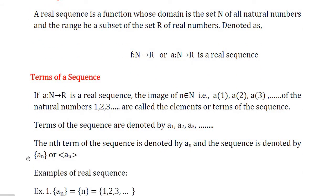The nth term of the sequence is denoted by aₙ. The sequence is denoted by {aₙ} within flower brackets, or aₙ between less-than and greater-than symbols. Sometimes the sequence can also be denoted as {xₙ} within flower brackets. The terms of the sequence xₙ are denoted by x₁, x₂, x₃, and so on.